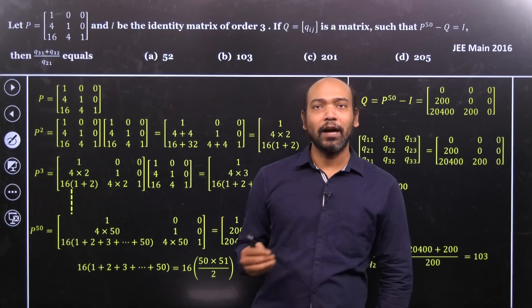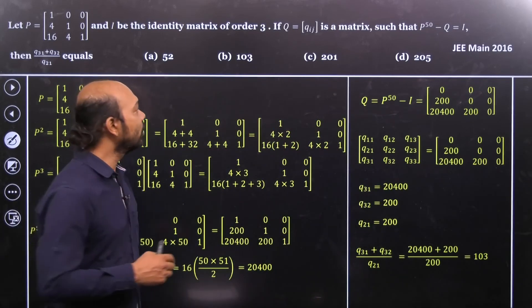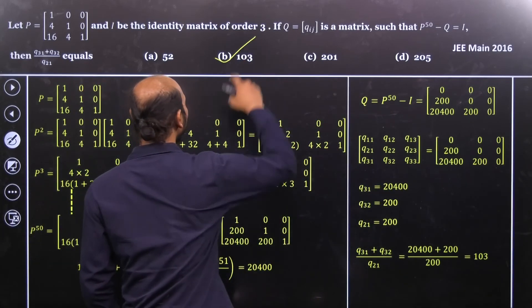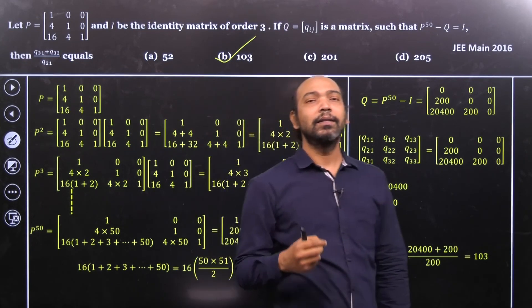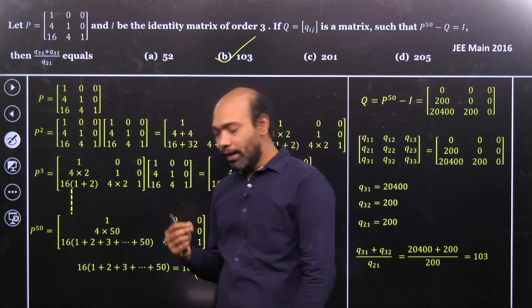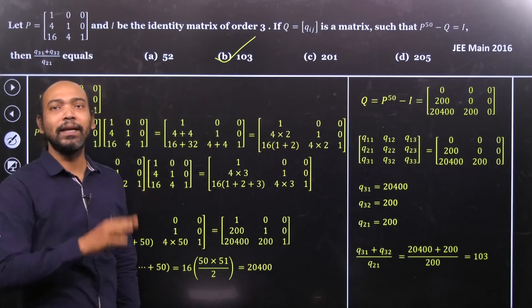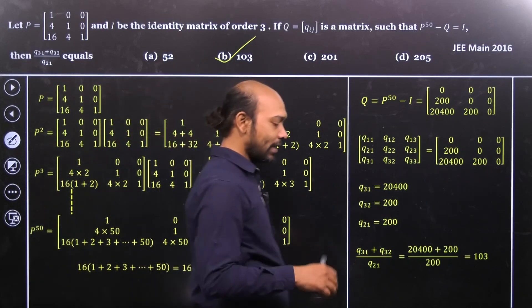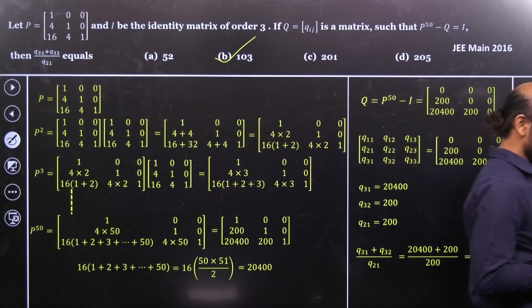And that's it. So therefore, for this problem, obviously, you understand that option B is the right choice. So that's it. So here, this problem is little tricky in that to find P to the power 50 and the remaining are very straightforward. So that's it. Hope you understood the problem. Thank you.